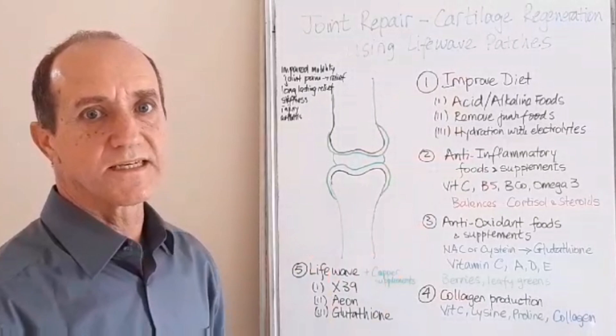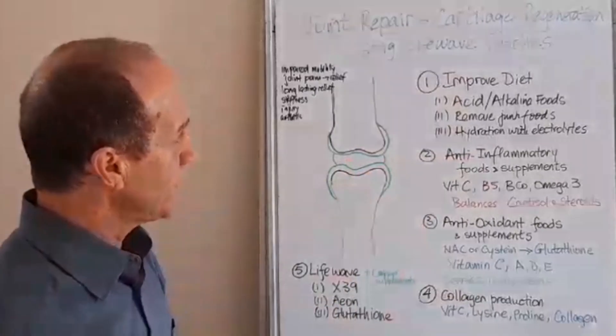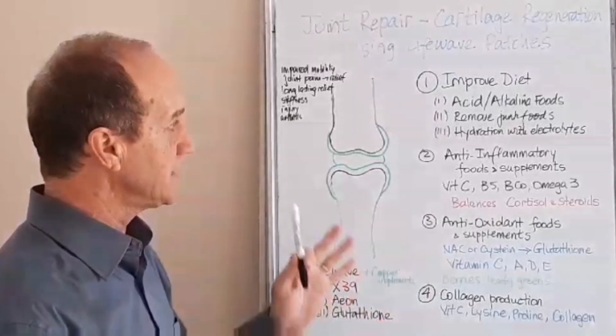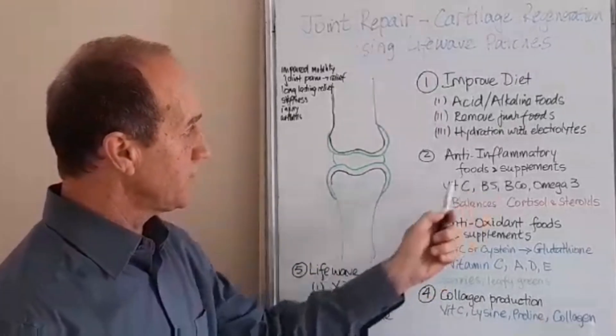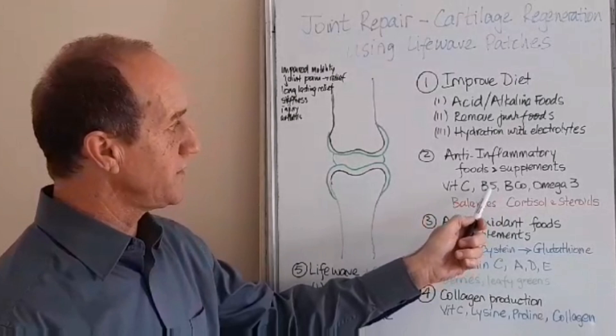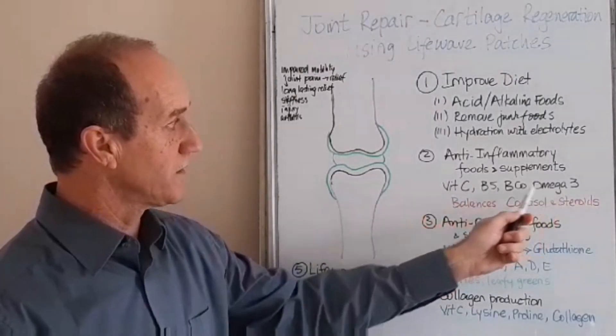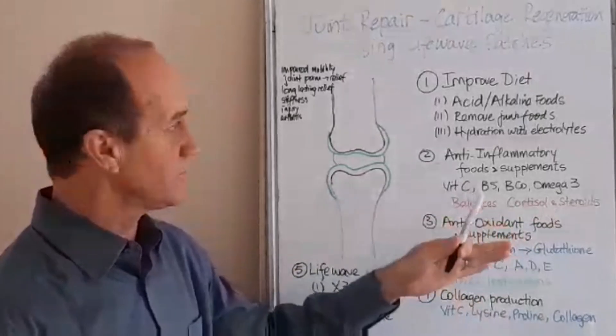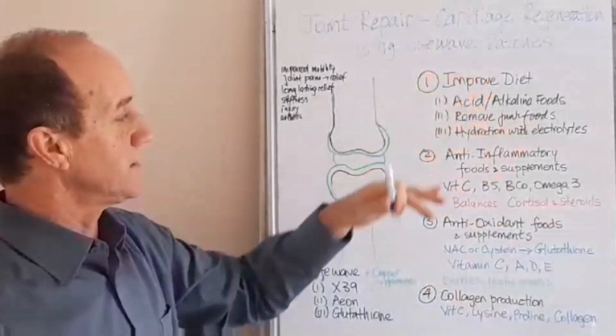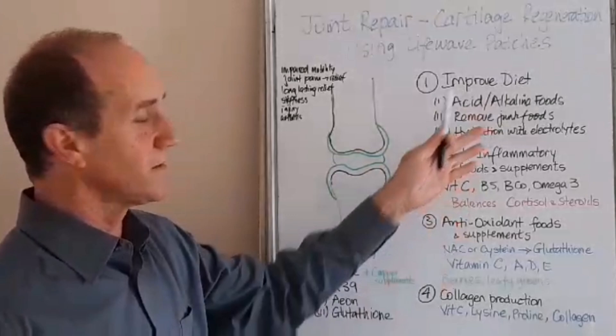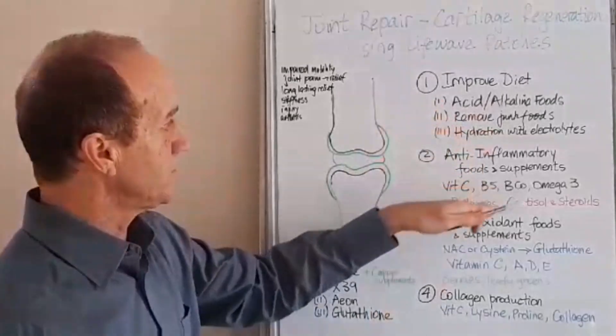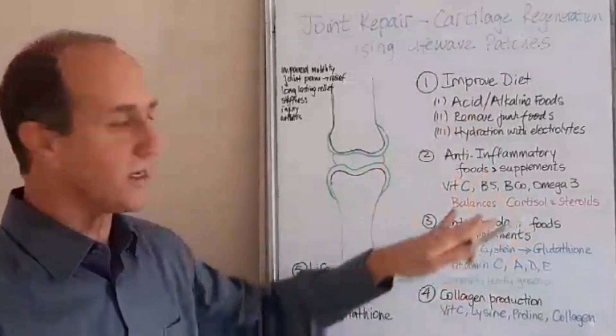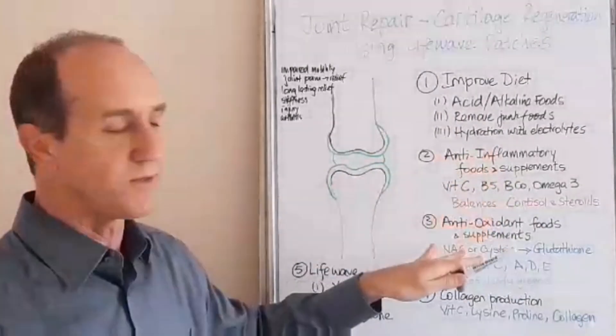Number two, you need to take anti-inflammatory foods and supplements. In summary, the supplementation is vitamin C, vitamin B5 in large doses. These two with omega-3 helps to produce the natural steroids, it balances cortisol and steroids. So instead of taking steroids from an external point of view, medication, your body can actually make its own steroids, so you provide those materials.